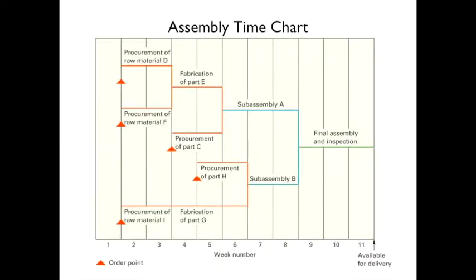Here's an example of an assembly time chart. You work backwards when creating this. It takes three weeks for the final assembly and inspection. Assembly B is faster than assembly A, so you don't have to start it until later. Some parts take longer to procure and fabricate. This chart lays out when you have to order things so that all components are ready when needed.